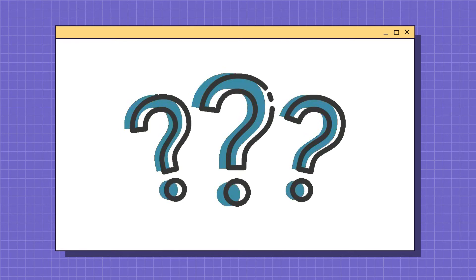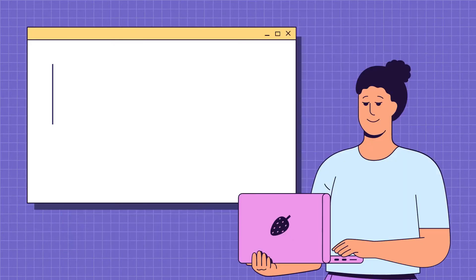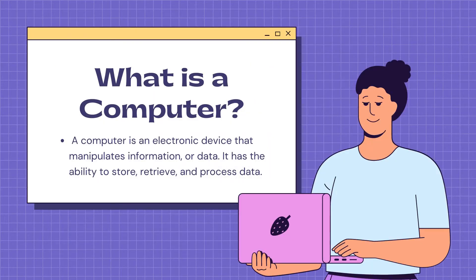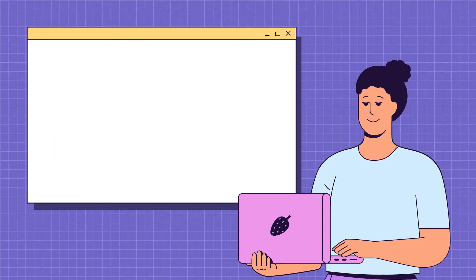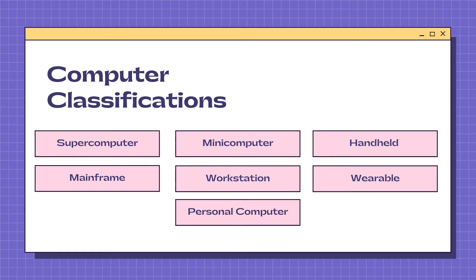But there are also other types of computers. First of all, what is a computer? A computer is an electronic device that manipulates information or data. It has the ability to store, retrieve, and process data. Here are the seven computer classifications.